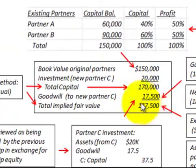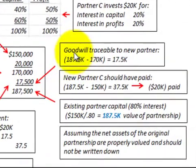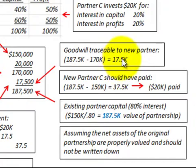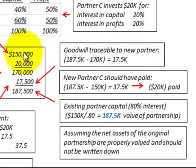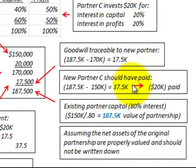So the implied partnership value is $187,500, and the capital balance is $170,000, giving us a $17,500 difference — and that's the goodwill traceable to the new partner. $187,500 less $170,000 gives us $17,500. The logic is that the new partner C should have paid $187,500 less the $150,000 capital from the original partners, meaning they should have paid $37,500 to enter the partnership. But they only paid $20,000, and therein lies the goodwill of $17,500.